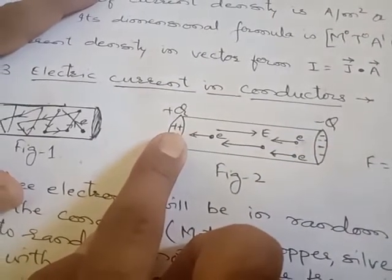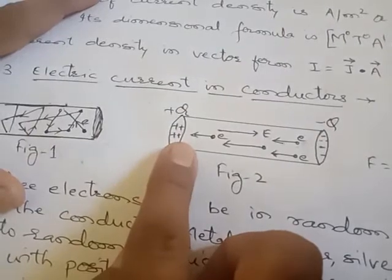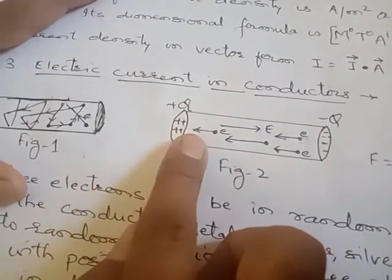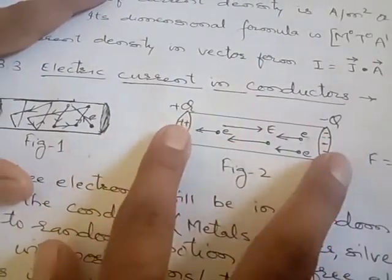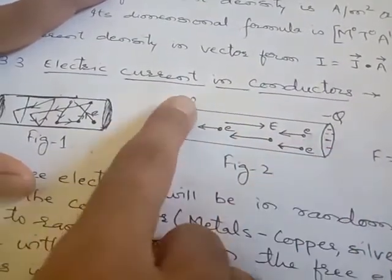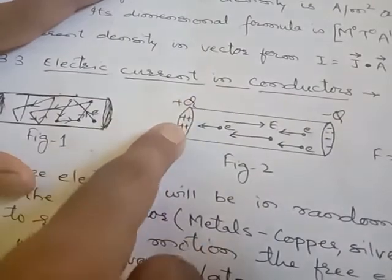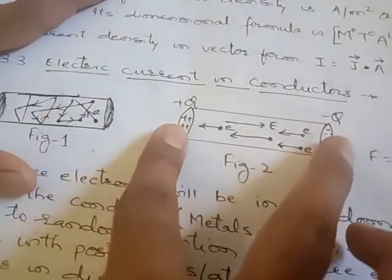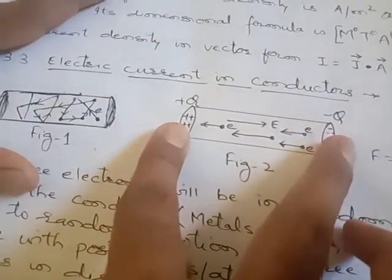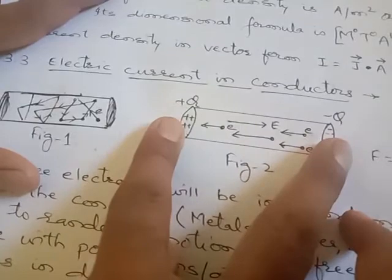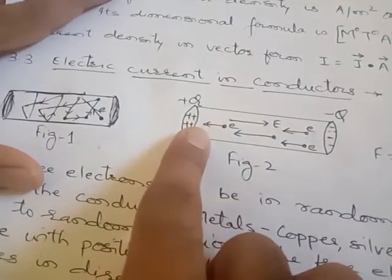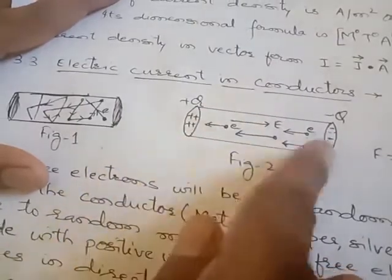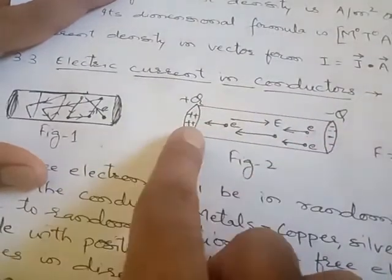What Ohm's Law has stated is that the current flowing through a conductor — meaning the electrons flowing — depends on the potential difference. The current flowing through a conductor is directly proportional to the potential difference between the ends of the conductor.